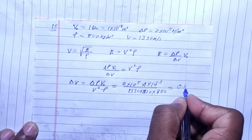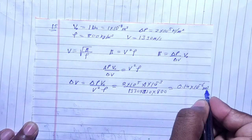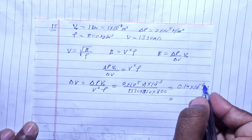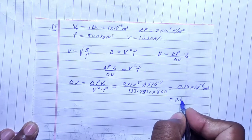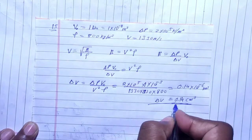We will solve it and get 2.14×10^-6 m³. If we write this in centimeter cube, it becomes 2.14 cm³. This is the change in volume.